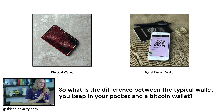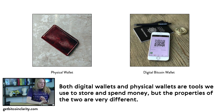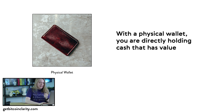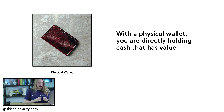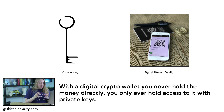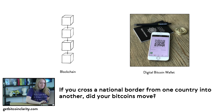Now let's talk about the difference between the physical wallet in your pocket and the digital wallet that you store your bitcoins in. Both digital wallets and physical wallets are tools we use to store and spend money, but the properties of these two are very different. With physical wallets, you're holding the cash directly — at least when we're talking about physical cash. With a crypto wallet, you never actually hold the money directly; you only ever hold access to it, via your private key.